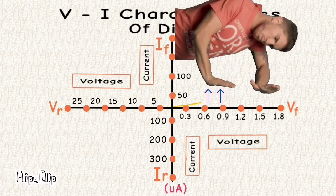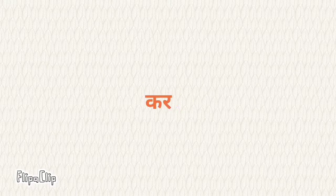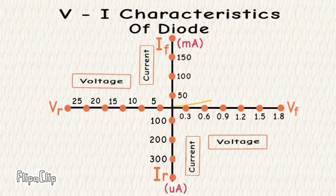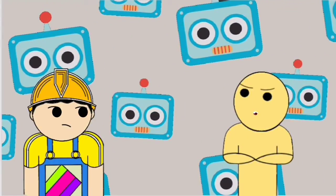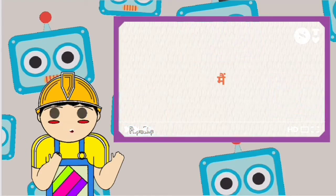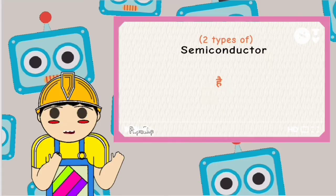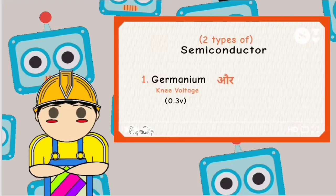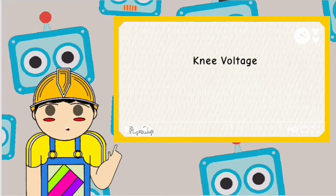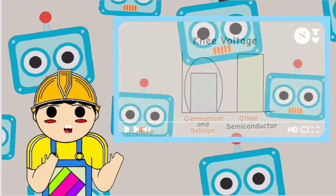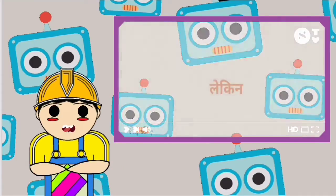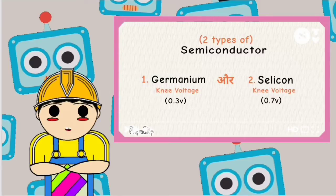Yeh behavior current flow ko limit karne ki koshish karta hai. Lekin jab forward voltage increase hote hote ek certain amount of voltage tak pahunch jata hai, toh woh depletion layer break ho jati hai aur current flow hone lagta hai. Is voltage ko knee voltage kaha jata hai. Basically yeh 2 tariqe ki hoti hai — kyunki electronics mein 2 type ke semiconductors use hote hain: ek hai germanium jiska knee voltage 0.3 volt hai, aur doosra hai silicon jiska knee voltage 0.7 volt hai.